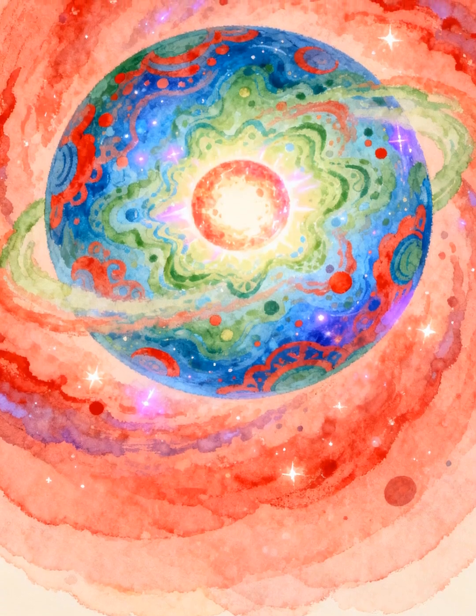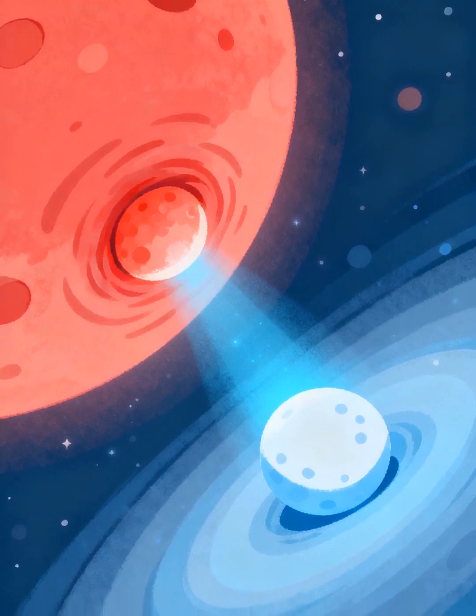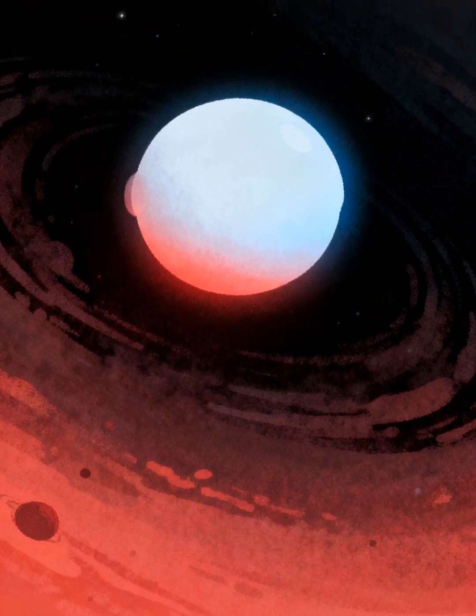Eventually, the outer layers drift away, forming a planetary nebula. The core collapses into a white dwarf, a small, dense remnant. The white dwarf slowly cools and fades over billions of years.